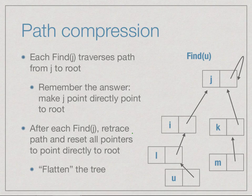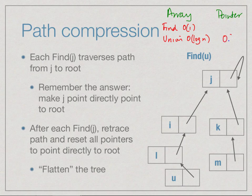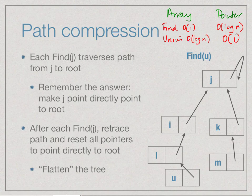We are now at a dual position compared to the earlier array-based structure: previously find was O(1) and union was amortized O(log n); now with this pointer-based structure, union is O(1) but find is O(log n). However, it turns out we can do something much more clever to make find even more efficient while keeping union at O(1).